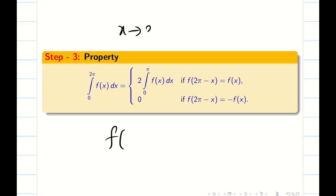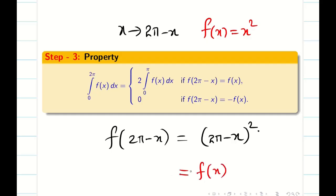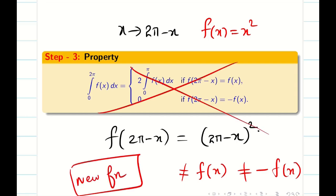Okay, let us check this formally. Now x is replaced by 2π minus x, so f of 2π minus x is 2π minus x whole square, where my f of x is x square. See this. This is not equal to f of x as well as this is not equal to minus f of x. This is a new function. So I cannot apply the property.